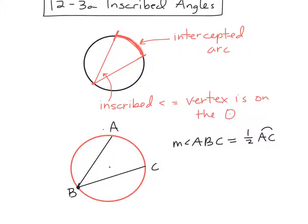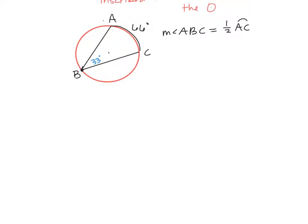For instance, if this arc is 66 degrees, what would angle B have to be? 33 — it's half of the arc. So if my arc is 66, then my angle is 33. That's called the inscribed angle theorem. When you have an inscribed angle, it's always half as much as the arc across from it — its intercepted arc.